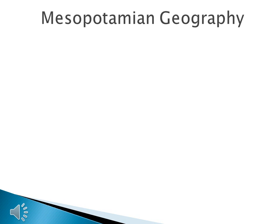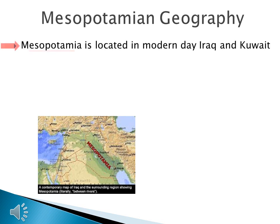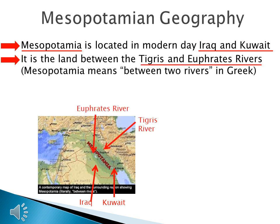Now that you know the general geography of the Middle East, let's talk about Mesopotamian geography. Mesopotamia is important because this is where we find the first civilizations. Mesopotamia is located in modern-day Iraq and Kuwait, and it is the land between the Tigris and Euphrates rivers. In fact, Mesopotamia means "between two rivers" in Greek. I'm going to give you three landmarks: landmark number one is the Mediterranean Sea, landmark number two is Egypt, and landmark number three is the Persian Gulf.